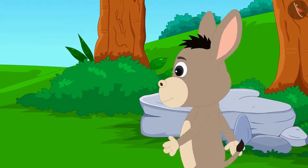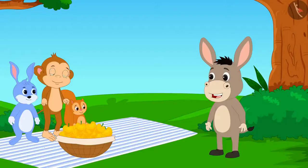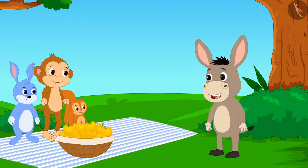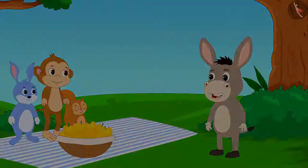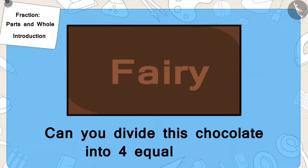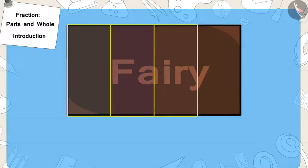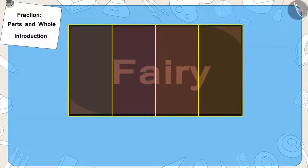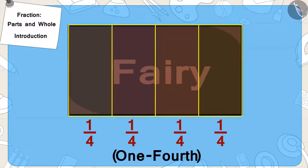Just then, Bholla the donkey was passing by. Once again, Bholla also decided to help, and in return he too asked for an equal share of chocolate for himself. Now, can you divide this chocolate into four equal parts? Write the part of the chocolate received by each one of them as a fraction. Well done, children — you have found the correct answer. We also call one by four as one-fourth.